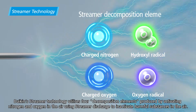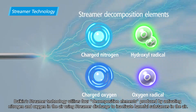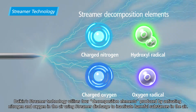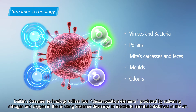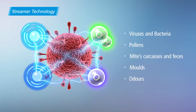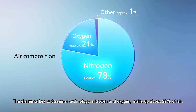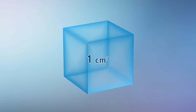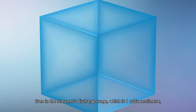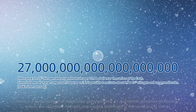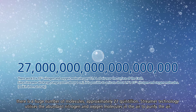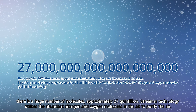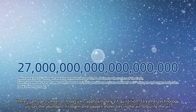Daikin's streamer technology utilizes four decomposition elements produced by activating nitrogen and oxygen in the air using streamer discharge to inactivate harmful substances in the air. The elements key to streamer technology — nitrogen and oxygen — make up about 99% of air. Even in the streamer's discharge range of one cubic centimeter, there is a huge number of molecules: approximately 27 quintillion. Streamer technology utilizes these abundant nitrogen and oxygen molecules to purify the air.